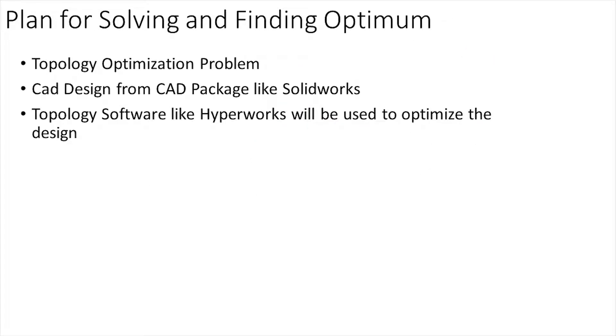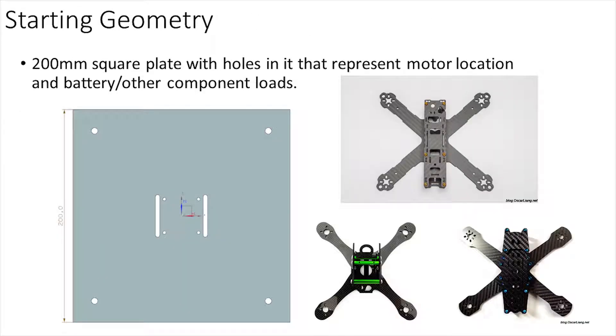To solve this and find the optimum frame design I used HyperWorks and a topology optimization problem. The design I used was similar to the majority of drone frame designs out there. It's a 200 by 200 square plate which yields a 226 millimeter diagonal from hole to hole of the motor mounts, and this is typical amongst racers.